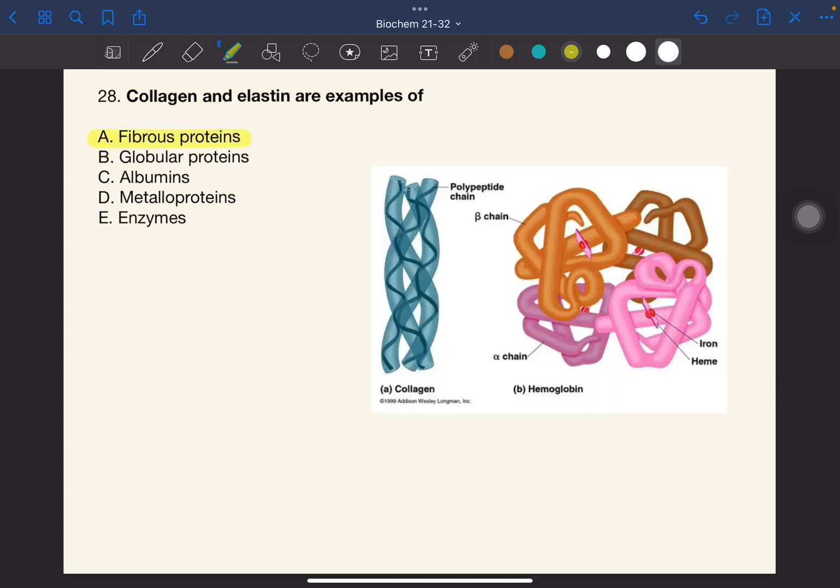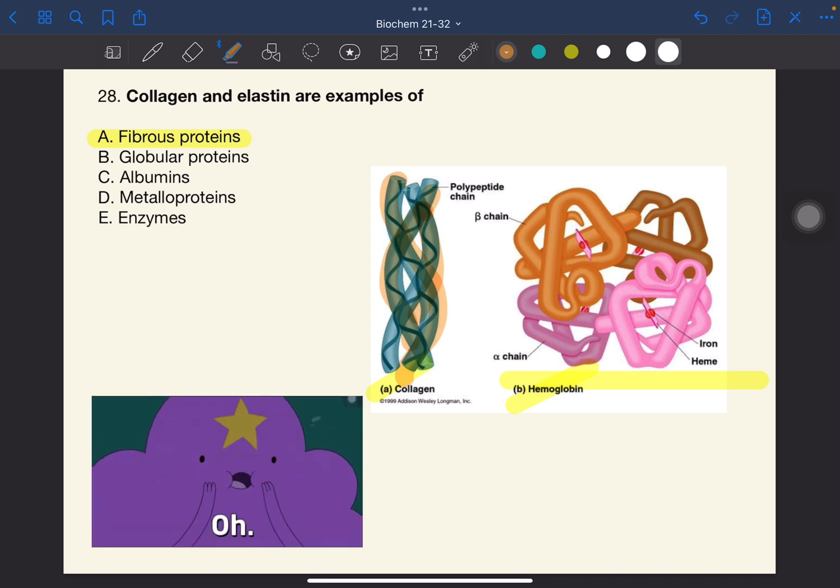Para hindi kayo makonfuse, fibrous proteins are different from globular proteins. Our earlier discussion about hemoglobin and myoglobin, these are globular proteins. The obvious difference between fibrous proteins from globular proteins is the shape. In fibrous proteins, the polypeptide chains are parallel to each other, which forms a fiber shape. Globular proteins, on the other hand, their polypeptide chains fold into each other, so it looks spherical.